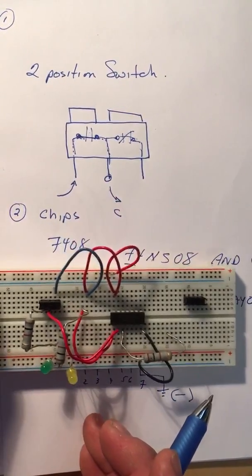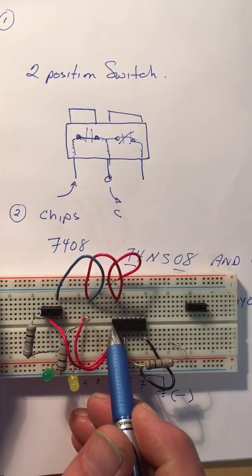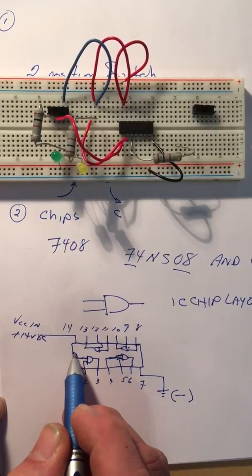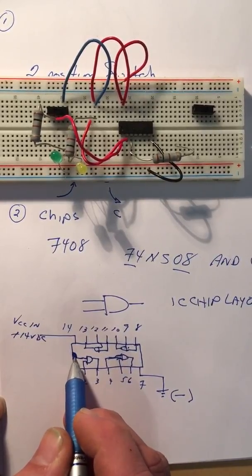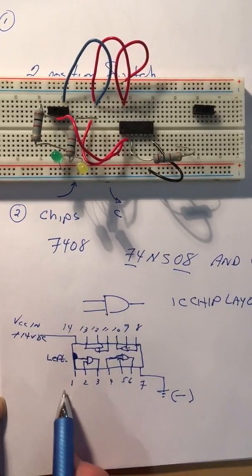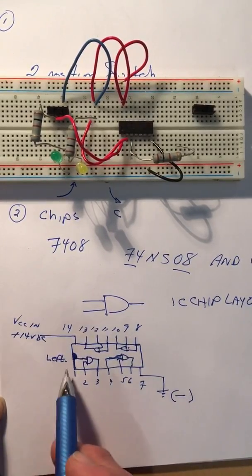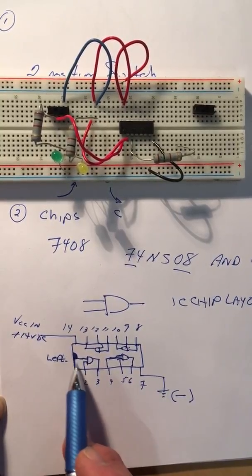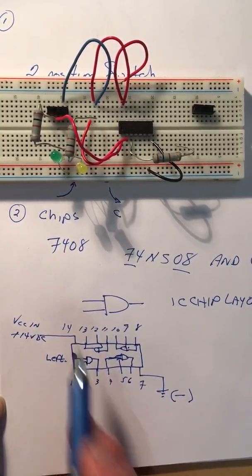So when you're positioning this chip, you'll notice that there is a little dent and looks like a half moon dent over here like this. That always has to be positioned to the left. That tells us that these pins run this way. So the pin directly below that little half moon divot is pin one, directly above it is pin 14.